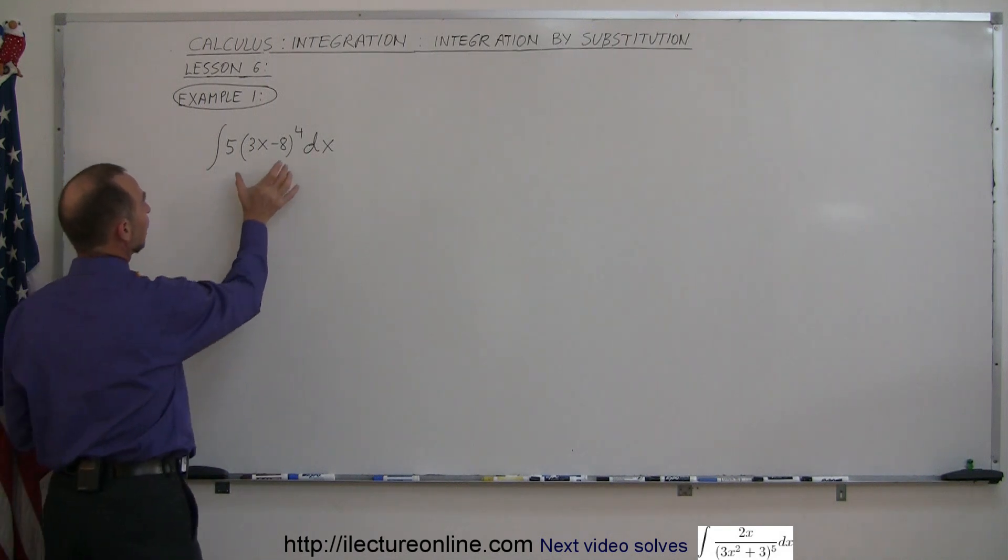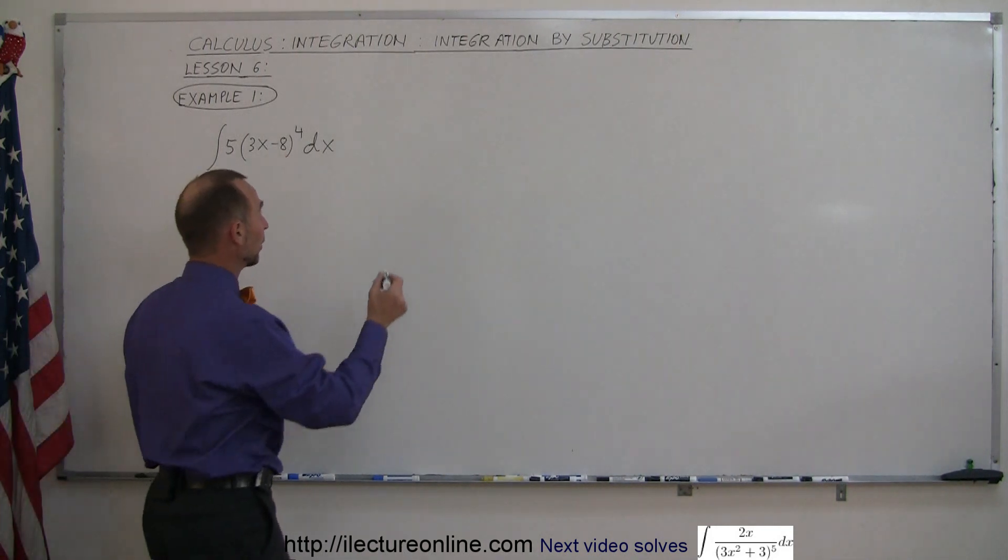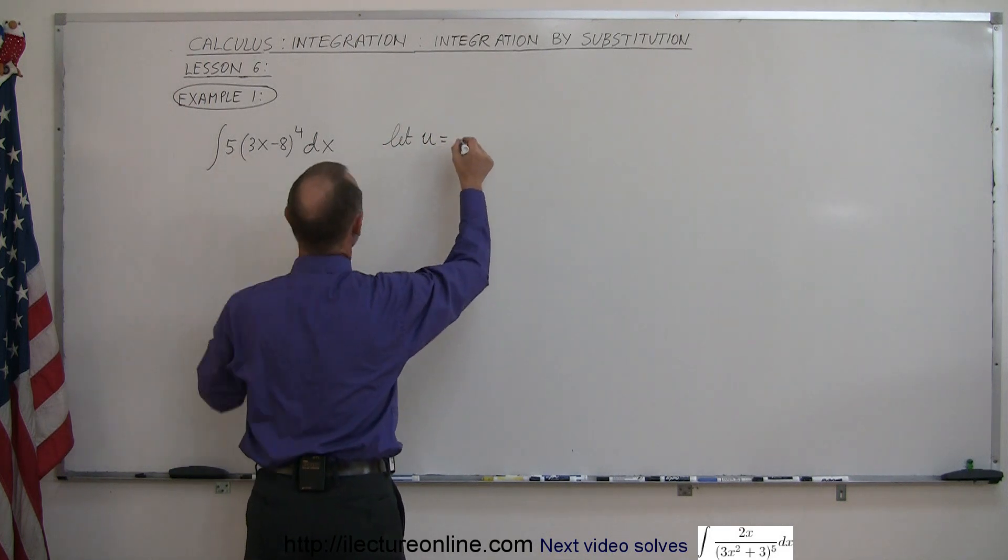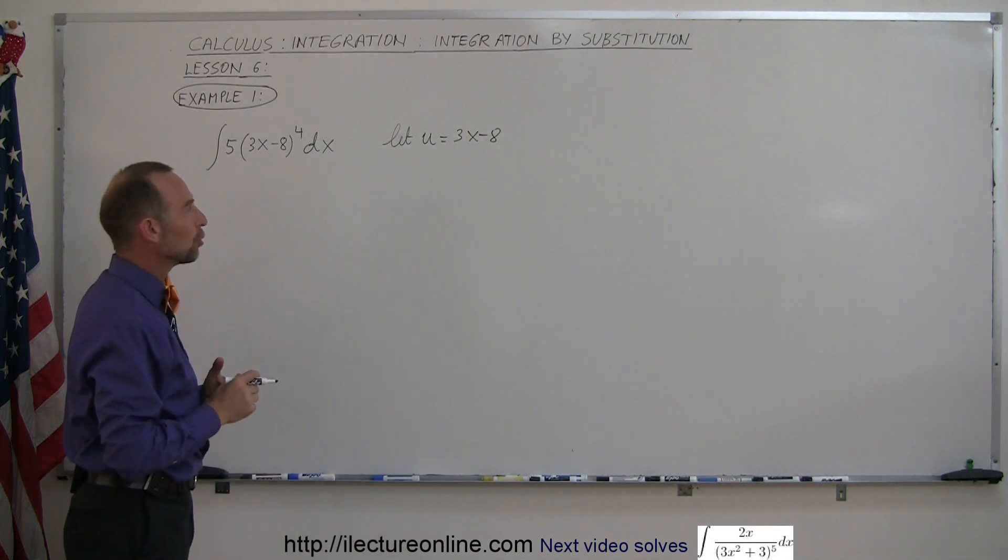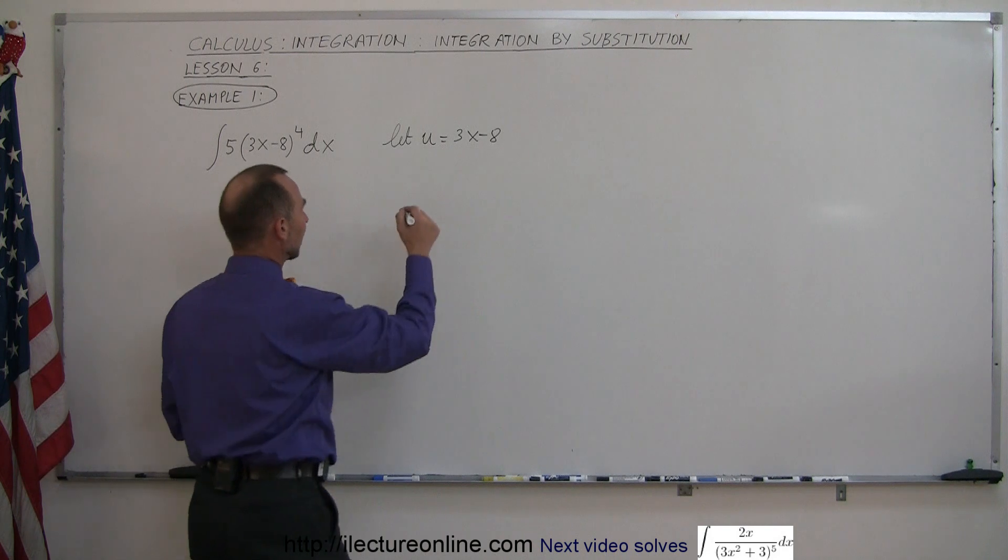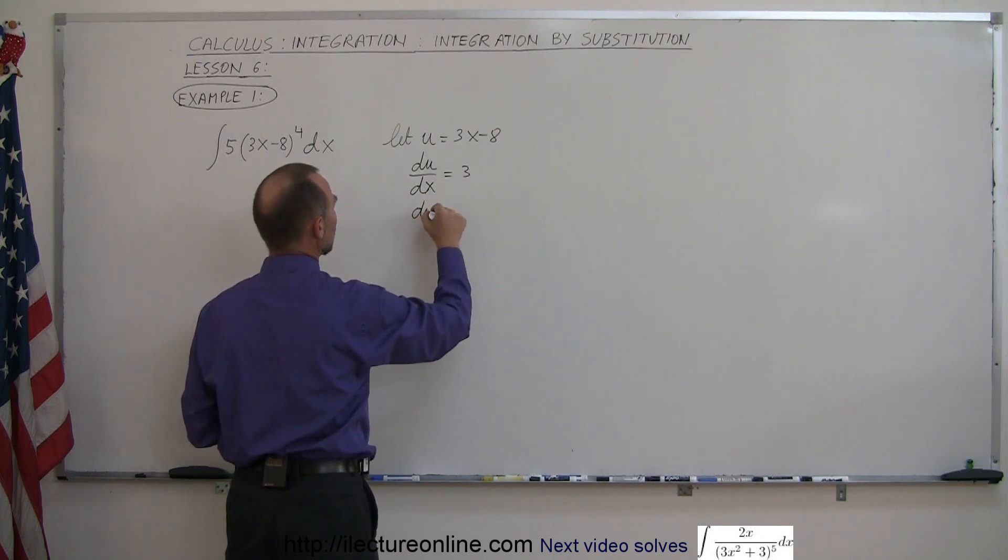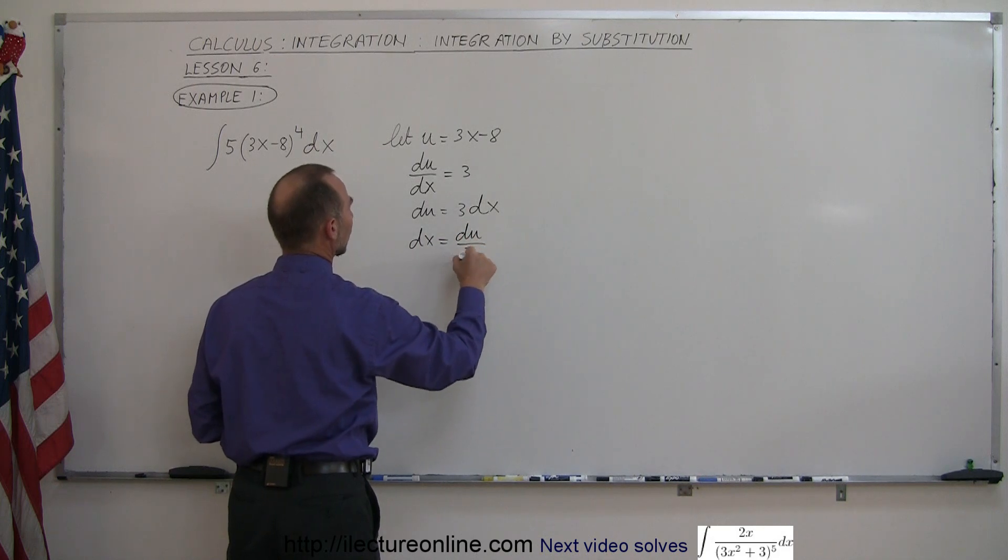We're going to take what's inside the parentheses here and substitute that for another variable, let's say the variable u. So we're going to say let u equal what's inside the parentheses, so this is 3x minus 8. Then we're going to take the derivative of u with respect to x, so du/dx of 3x minus 8 is equal to simply 3. We cross-multiply the dx over here, so du equals 3 dx. Then if we solve this for dx, we could say that dx equals du divided by 3.